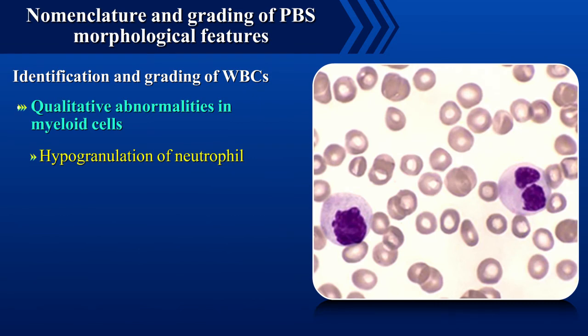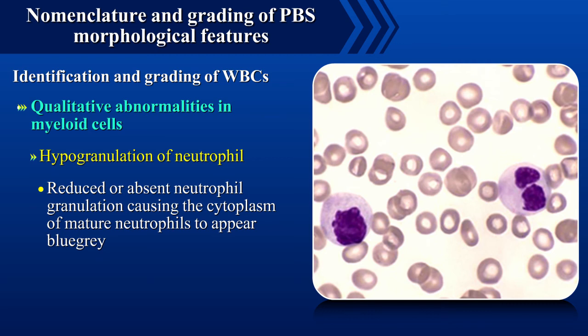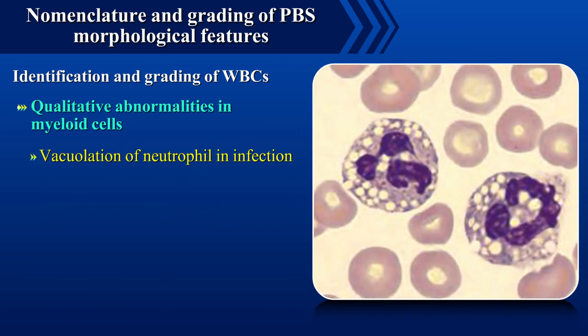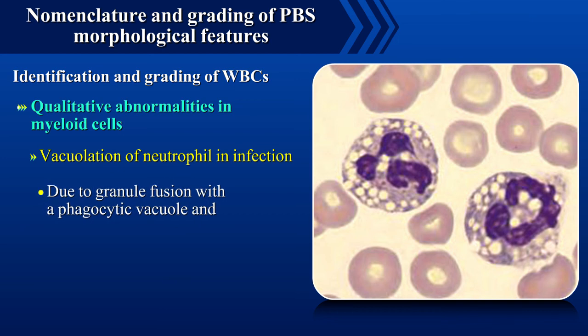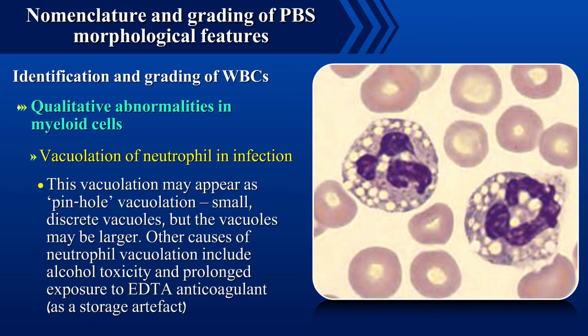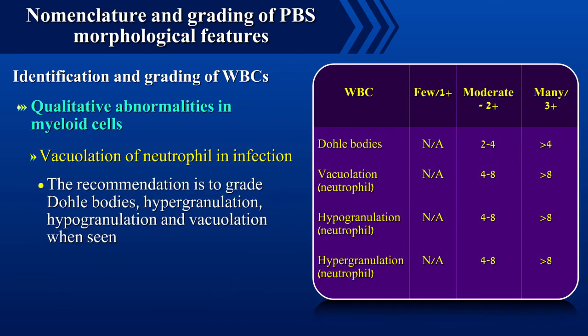Hypogranulation of neutrophil is reduced or absent neutrophil granulation causing the cytoplasm of mature neutrophils to appear bluish grey. Vacuolation of neutrophil in infection is due to granule fusion with a phagocytic vacuole and release of lysosomal contents to kill bacteria, and may appear as pinhole vacuolation with small or discrete vacuoles, but the vacuoles may be larger. Other causes include alcohol toxicity and prolonged exposure to EDTA anticoagulant, the latter being a storage artifact. The recommendation is to grade Dohle bodies, hypergranulation, hypogranulation and vacuolation when seen.